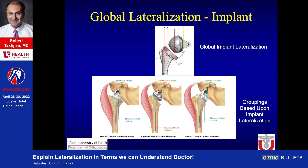Global implant lateralization is exactly what it sounds like. It is measured from the center of the stem to the face of the base plate. You can then group constructs based upon either a medialized or lateralized glenoid design combined with a medialized or lateralized humeral design.